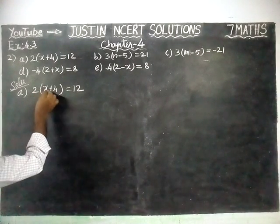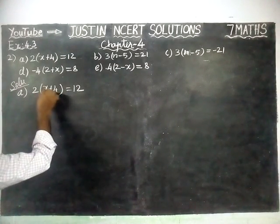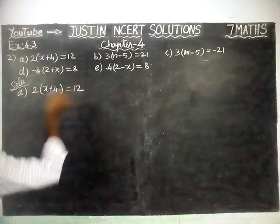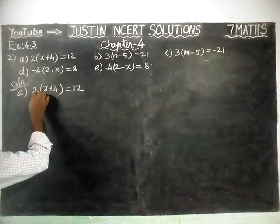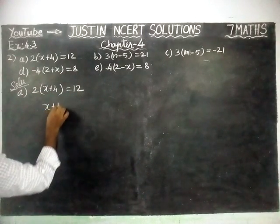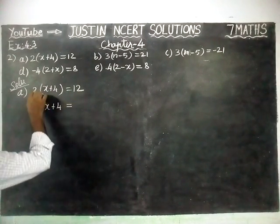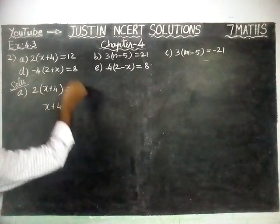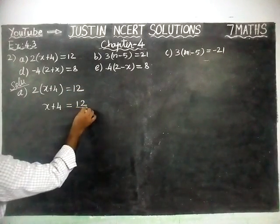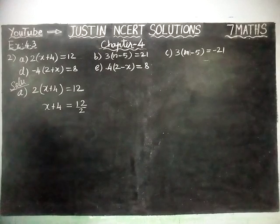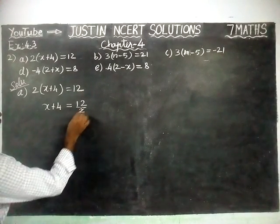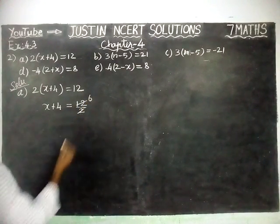2 into x plus 4 is there. This 2 is common for x also, and 4 also, equal to 12. Now I am going to take this 2 into the right hand side. So x plus 4 is equal to 12 divided by 2. Multiplication becomes division. 6 twos are 12.